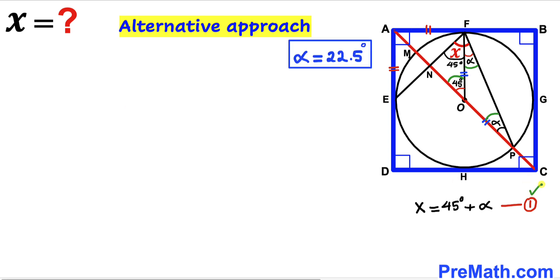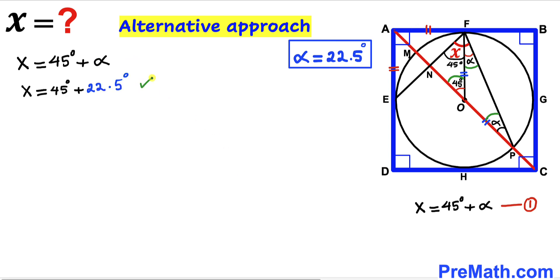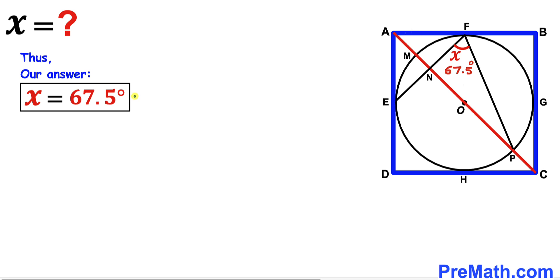Returning to equation 1, we substitute alpha equals 22.5 degrees: angle X equals 45 degrees plus 22.5 degrees. Adding these, our angle X turns out to be 67.5 degrees. That is our final answer.